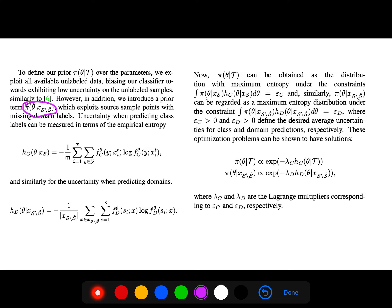Uncertainty when predicting class labels can be measured in terms of this empirical entropy. And similarly, the uncertainty of predicting the domains could be like this; this is again a kind of empirical entropy. So pi of theta can be obtained as distribution with maximum entropy under this constraint. Similarly, it can be regarded as maximum entropy under this constraint, where these are defined desired average uncertainties for both class and domain predictions respectively.